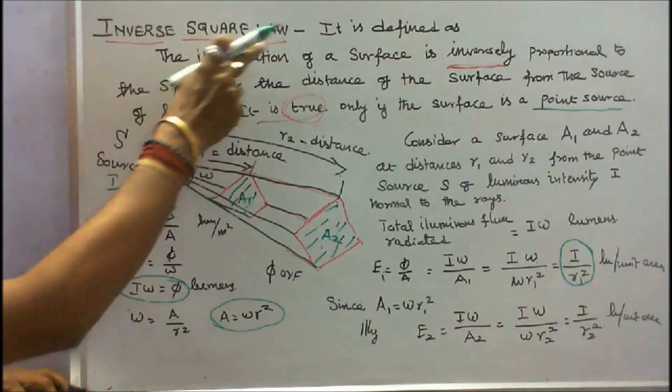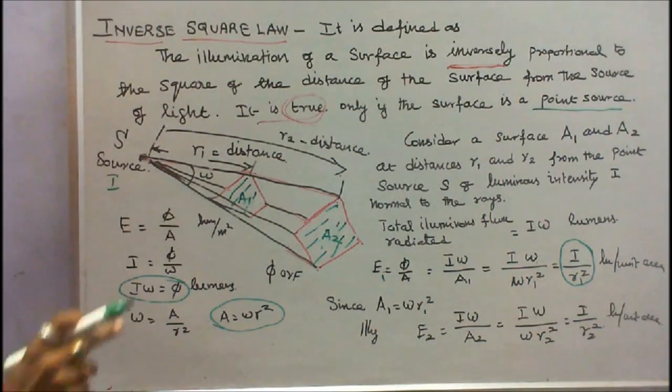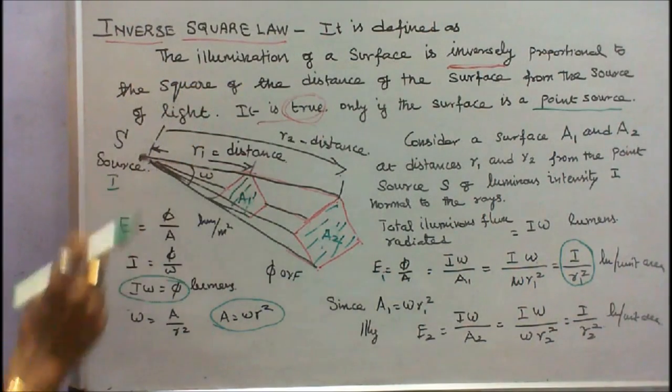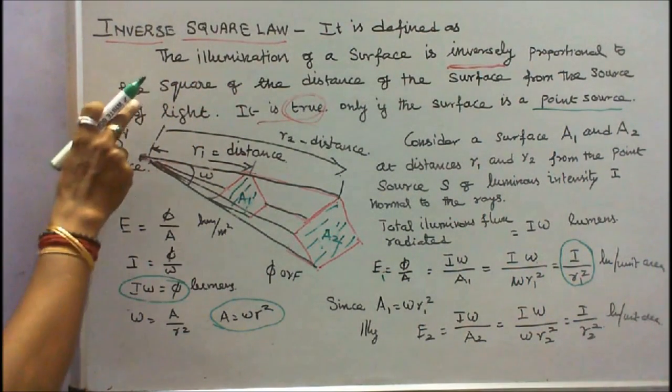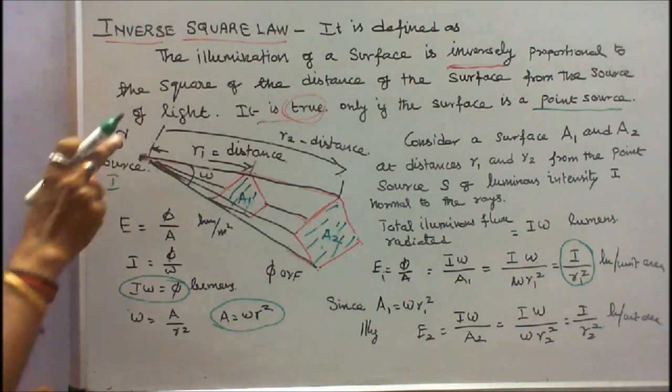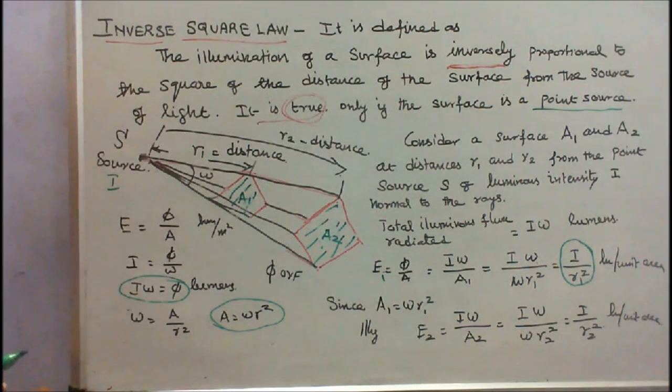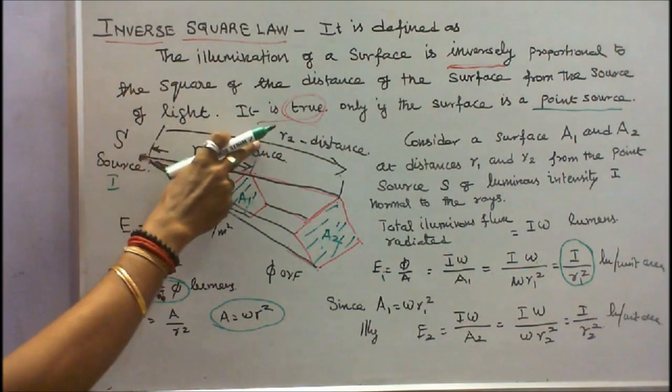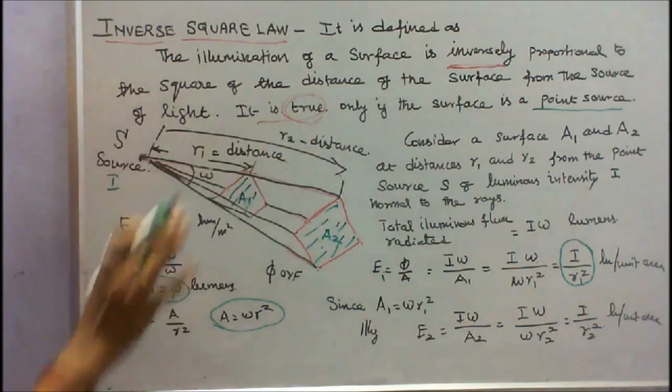Inverse square law is defined as: the illumination of the surface is inversely proportional to the square of the distance of the surface from the source of light. It is true only if the surface is a point source.